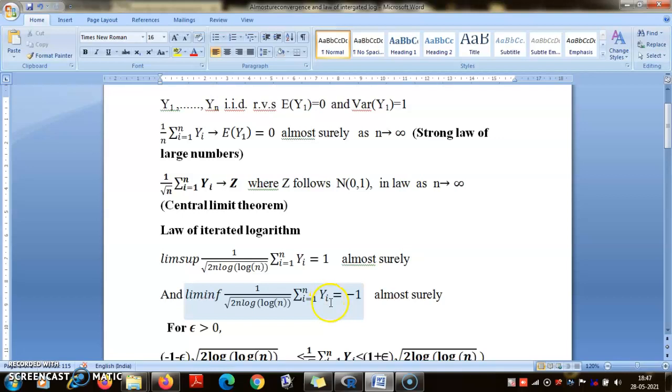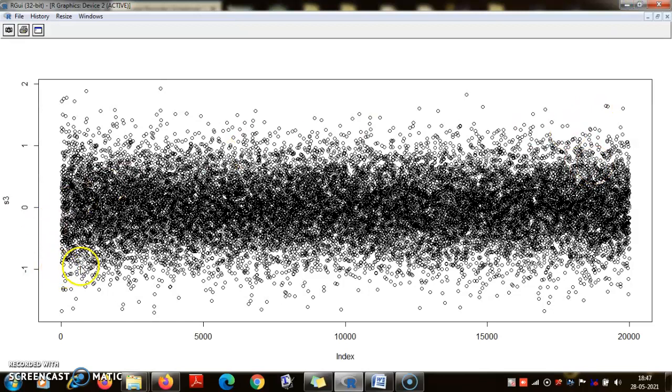And now here is the plot of S3. This is what exactly it would look like if Y1, Y2, ..., Yn are iid normal N(0,1), mean 0 variance 1, for 20,000 plots. The result said that with probability 1, nearly all the values will be between -1 and +1, all except finitely many.